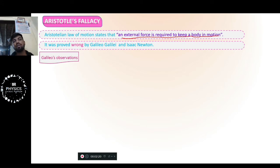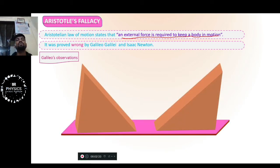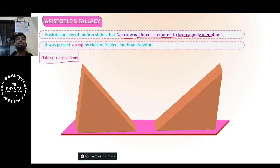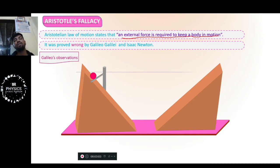After Aristotle, Galileo made an observation. Aristotle said force is required to keep the body in motion. Galileo showed through observation that there are two slopes. जैसे आप slope से cycle लेके नीचे उतरोगे तो आपको force लगाने की जरूरत नहीं — without pedaling भी जा सकते हो। So no force was needed there. The ball goes straight — no force was applied; it automatically came into motion.